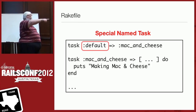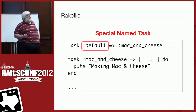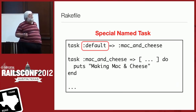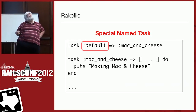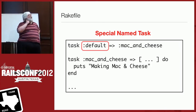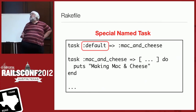Question: what if you put circularity in a dependency? Rake will detect circularities — it will say this is a circular dependency and complain until you fix it. It doesn't happen that often in real life, but you can occasionally get it.